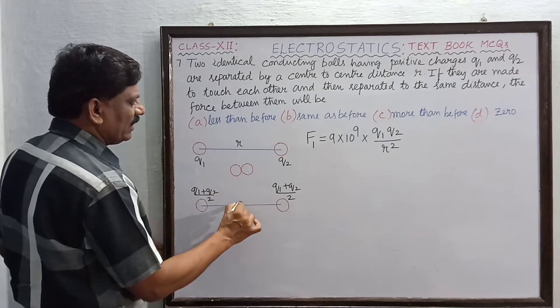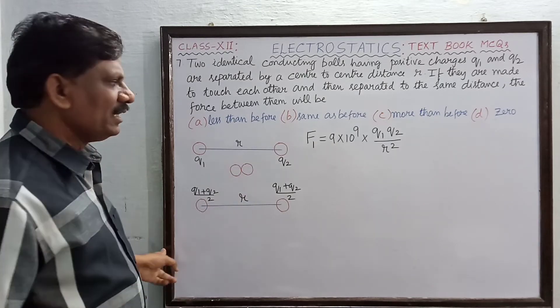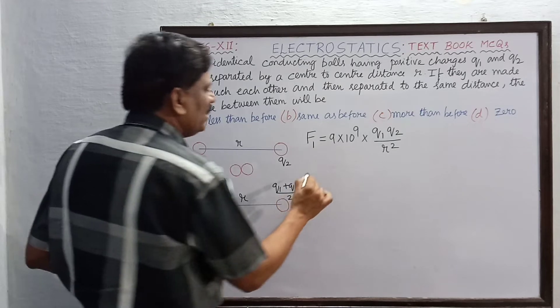Now the new charge present in them will be (q1+q2) by 2, and they are separated to the same distance of separation. What will be the new force between them? That will be F2.